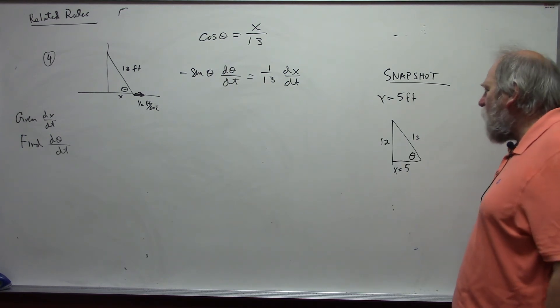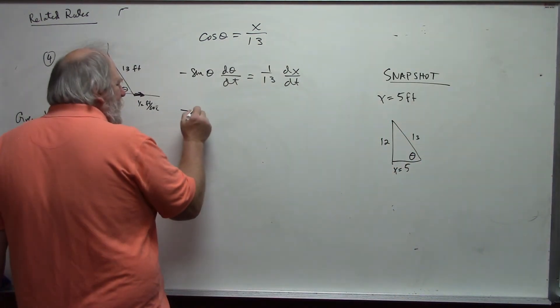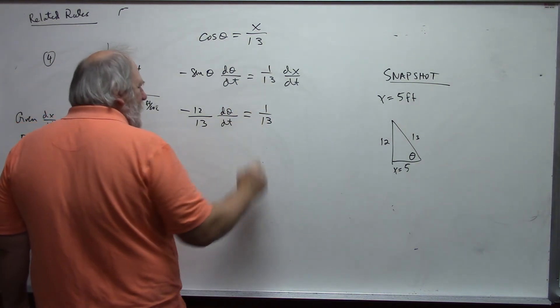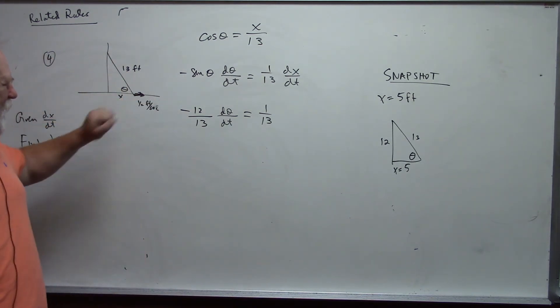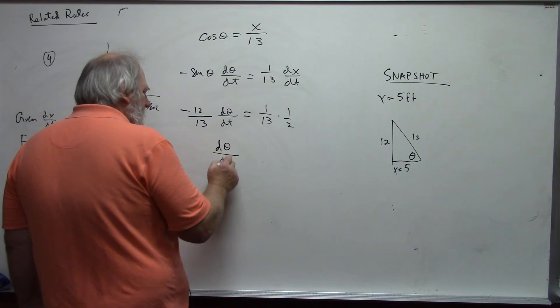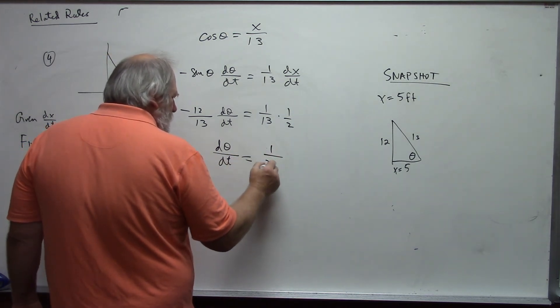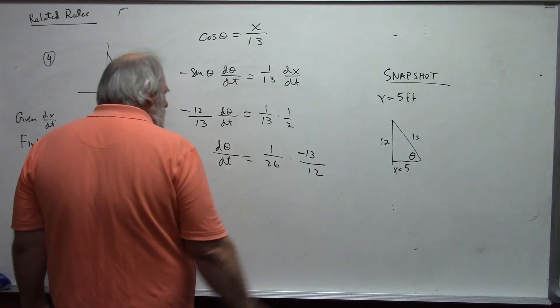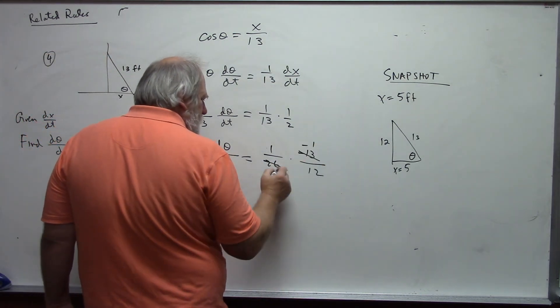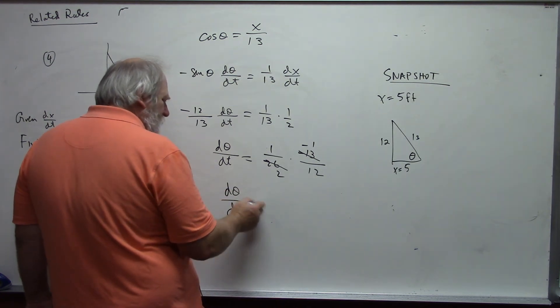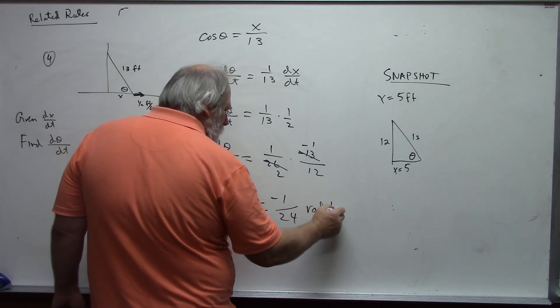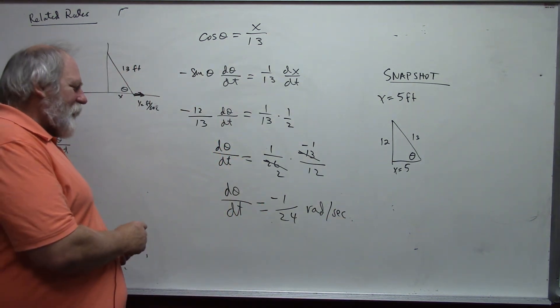And so, now, sine theta then is negative 12 over 13 d theta/dt is equal to 1 thirteenth. And, dx/dt, since the base is slipping out, x is getting larger, this would be 1 half. And, so, d theta/dt is going to be 1 over 26 times negative 13 over 12. And, again, I will reduce this. And, I get d theta/dt is equal to negative 1 over 24 radians per second. A rate of change of an angle is radians per second.